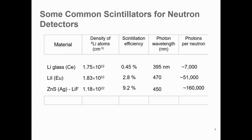These are some of the common scintillators which we use for neutron detection systems. In this table, it is given the scintillation efficiency, photon wavelength, and photons per neutron for different densities of the six lithium atoms.